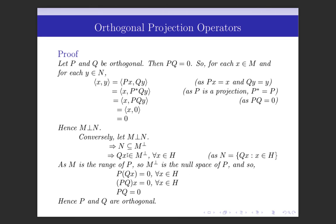So any element of the orthogonal complement of M is mapped to 0 under P. Therefore P of (Qx) equals 0 for every x in H, which can be written as PQ of x equals 0 for every x in H. Since PQ maps every element of H to 0, PQ must be the null operator. Therefore PQ equals the null operator, which means P and Q are orthogonal.